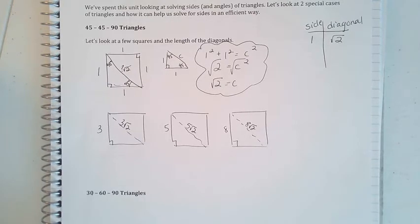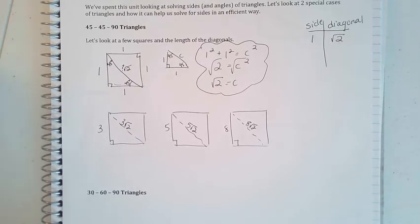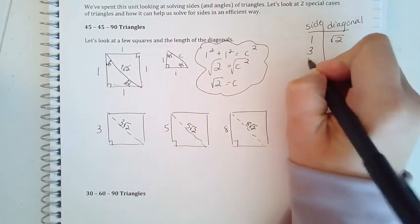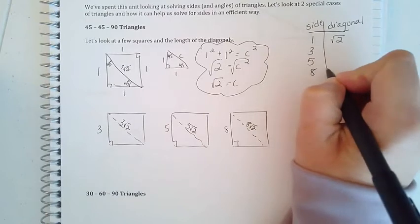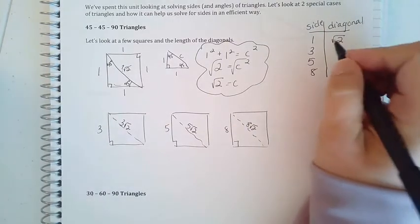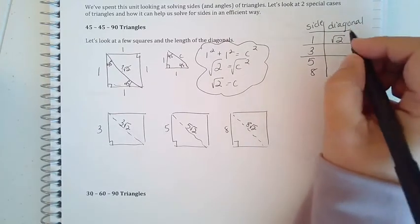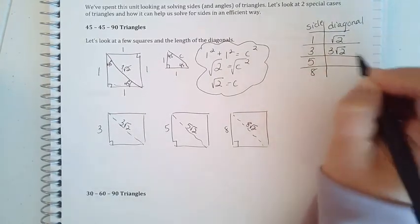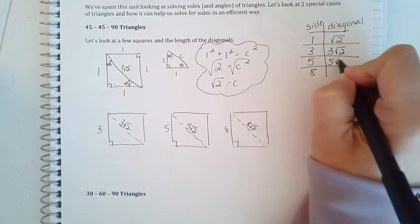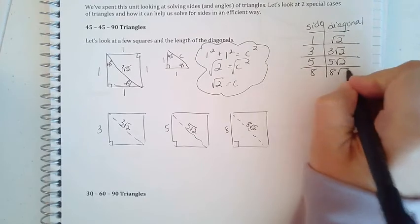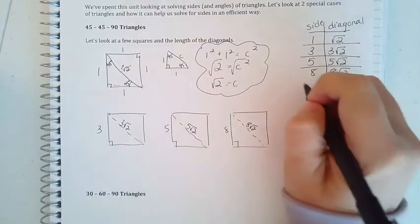If you paused, you're back. If you didn't, here we are. If I write down my sides, I have 3, 5, and 8. I just picked random ones. My diagonal for a side of 3 is 3 root 2, my diagonal with a side of 5 is 5 root 2, and my diagonal with a side of 8 is 8 root 2. So what do we notice?